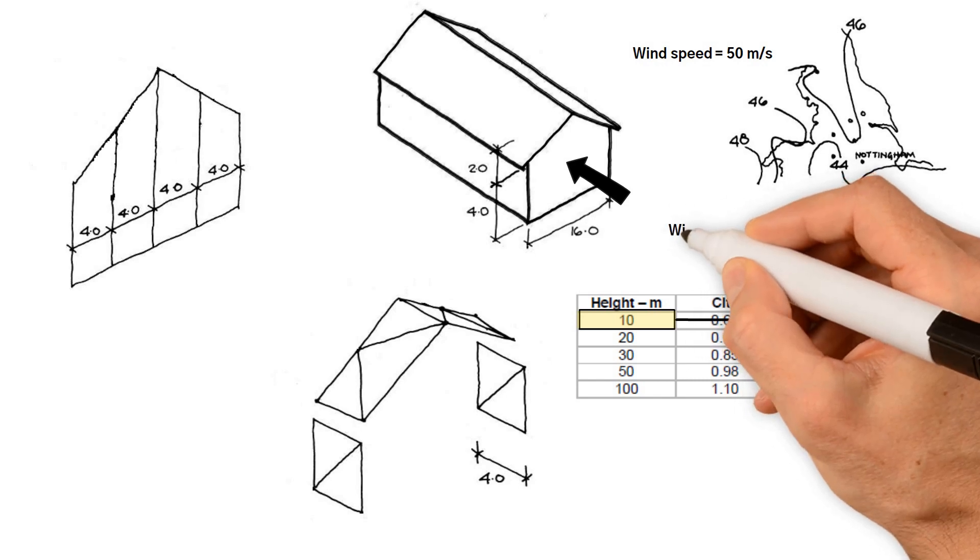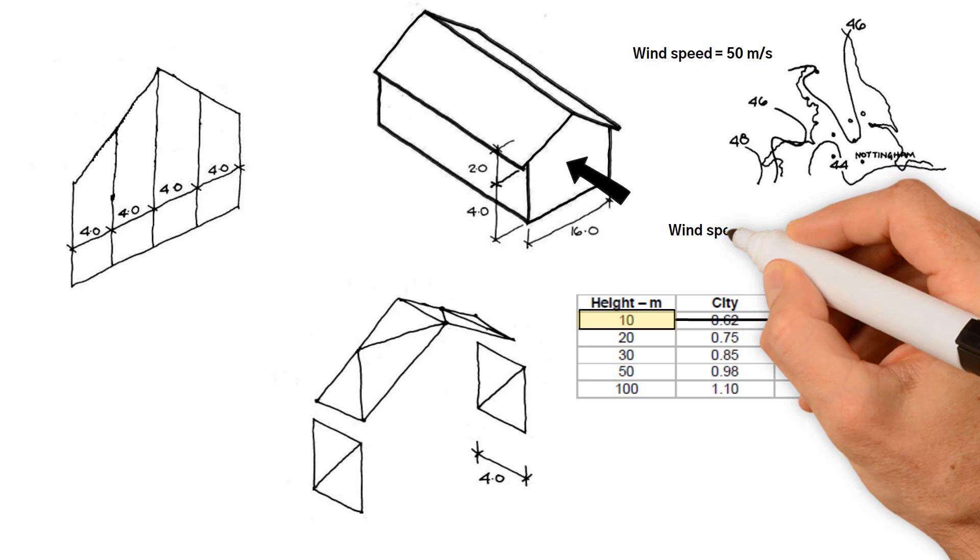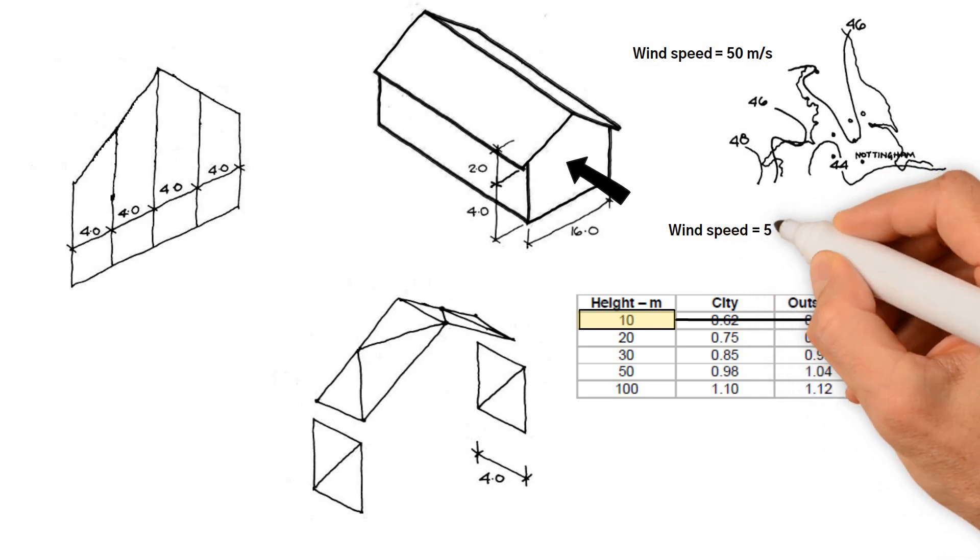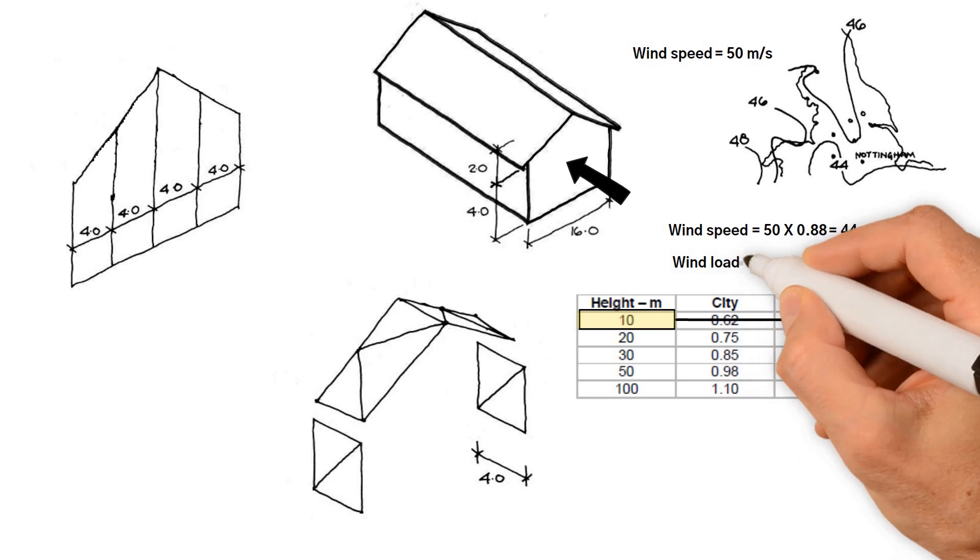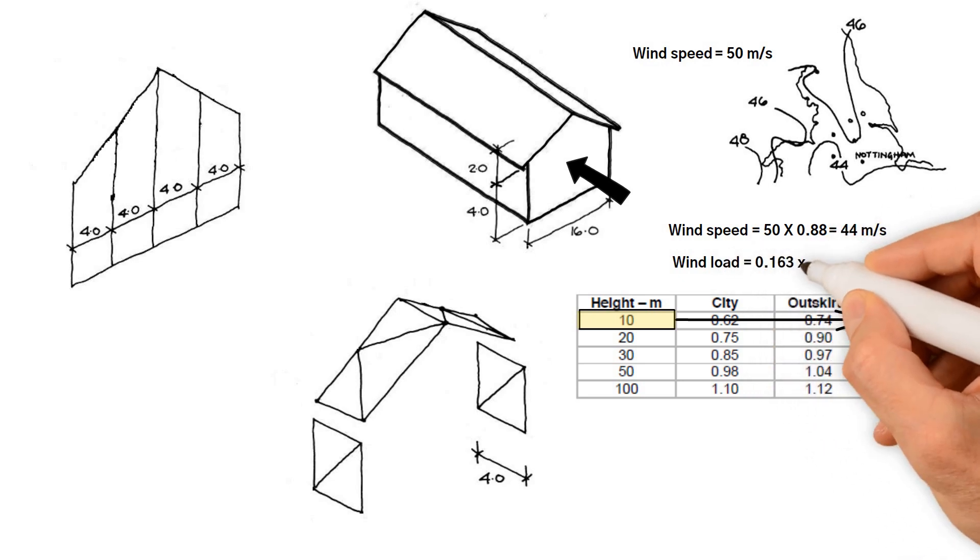Consequently, the design wind speed equals basic wind speed 50 meters per second multiplied by S-coefficient 0.88, which equals 44 meters per second. Therefore, wind pressure is obtained from 0.613 times design wind speed 44 squared divided by 1000, which equals 1.2 kilonewtons per meter squared.